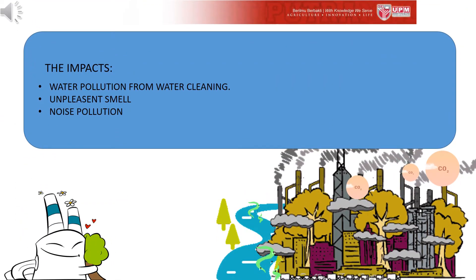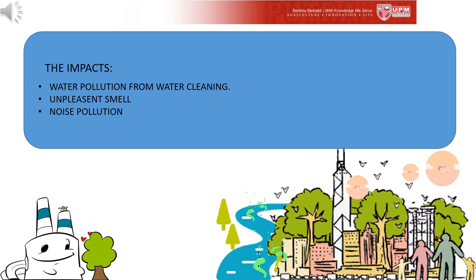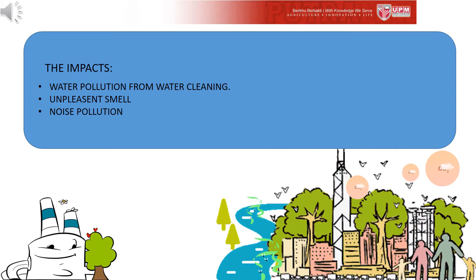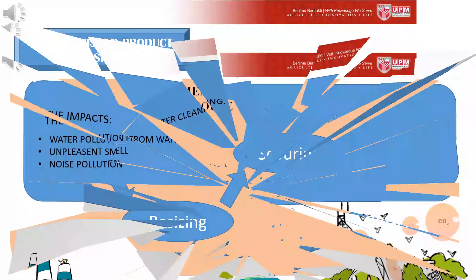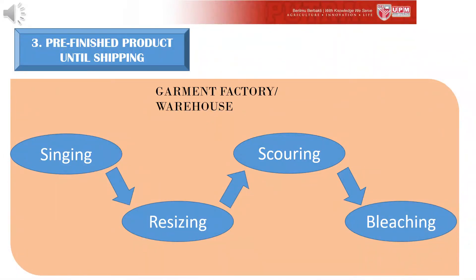The environmental impact of the manufacturing phase includes water pollution, unpleasant smell, and excessive usage of chemicals. The third phase begins with pre-finishing, where the final round of cleaning is carried out, including singeing, resizing, scouring, and bleaching. Scouring and bleaching clean up the fabric to remove seed fragments and plant wax, and also remove color to make it as white as possible.